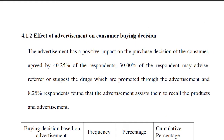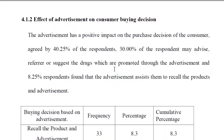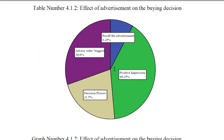If you look at section 4.1.2, 'Effects of Advertisements on the Consumer Buying Decision,' what you can do is simply have a table, then its graph, and then the interpretation. Alternatively, you could write the interpretation first, then the table and graph — that will also work. The number of questions will give you the number of graphs, and those graphs will have to be explained in this chapter.